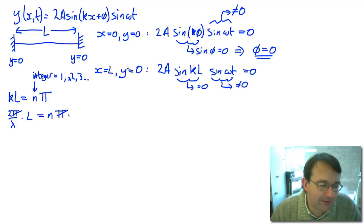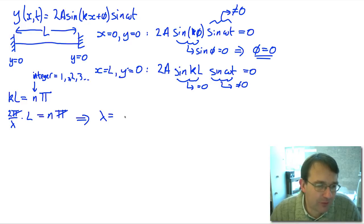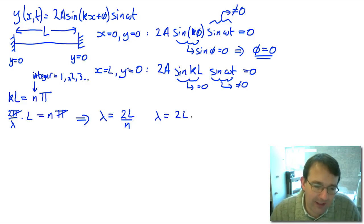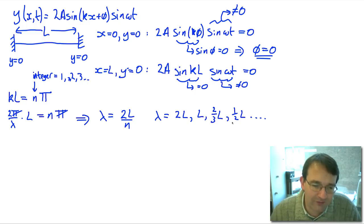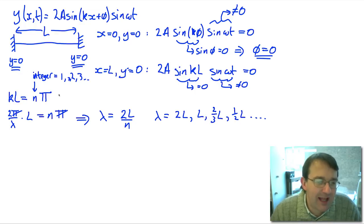Writing out the wave number: (2pi / lambda) times L equals n times pi. Cancelling the pi's and rearranging, the wavelength for the string is equal to 2L divided by n. This means the wavelength is allowed to be 2L when n equals 1, L when n equals 2, two-thirds L when n equals 3, half L when n equals 4, and so on. With our standing wave, we've restricted ourselves to only having certain fixed wavelengths — any other wavelength will not obey the boundary conditions and is not allowed.